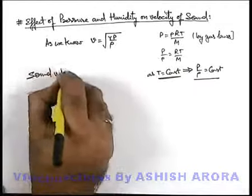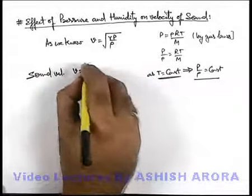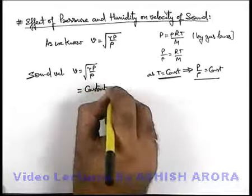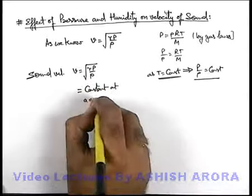So we can also write sound velocity V, which is root of gamma P by ρ, this is a constant at a given temperature.